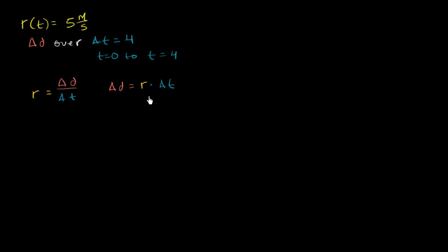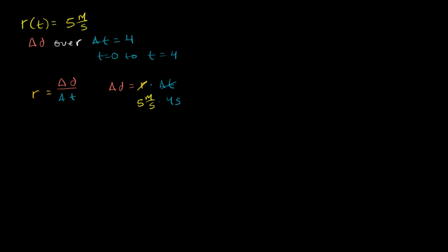If you just apply this — our rate is a constant five meters per second and our delta t is four seconds — that's going to give you 20. The seconds cancel with seconds, giving you 20 meters. So the total change in distance over those four seconds is going to be 20 meters.